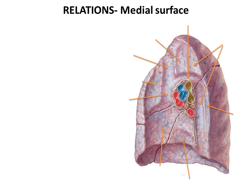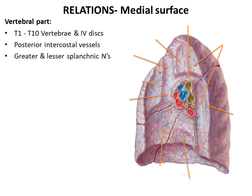The medial surface of the lung contains the hilum and the pulmonary ligament. It is further subdivided into the anterior mediastinal part and the posterior vertebral part. The relations of the vertebral part are the same on both sides, i.e. 1st to 10th thoracic vertebra and their intervertebral discs, the posterior intercostal vessels, and the greater and lesser splanchnic nerves.